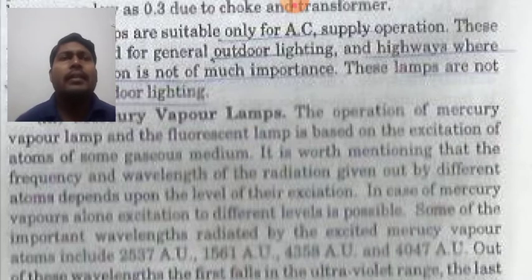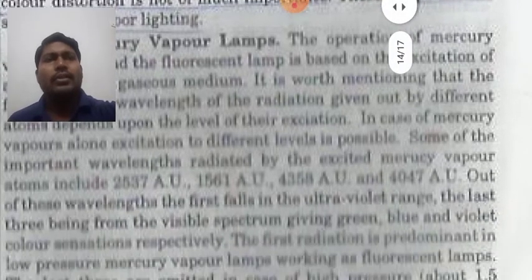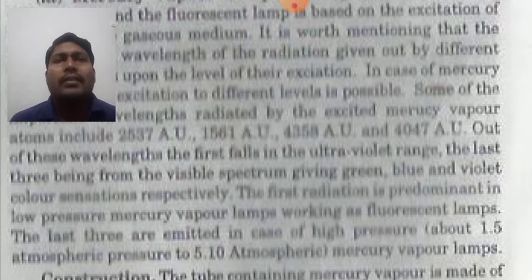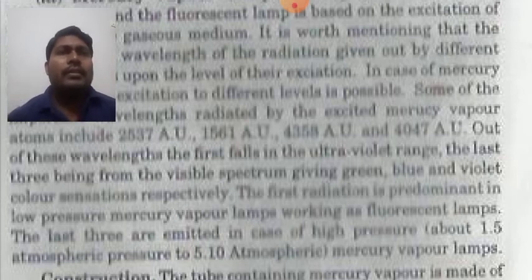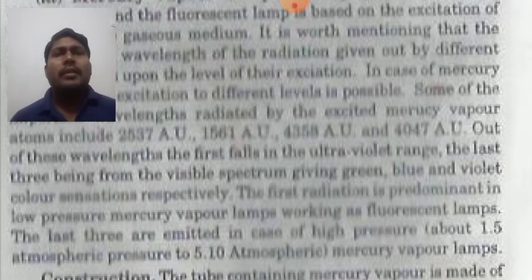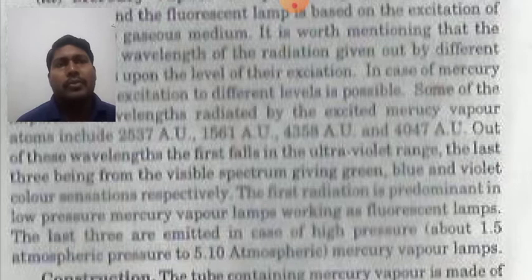Some important wavelengths radiated by excited mercury vapor atoms include 2537 Å, 1561 Å, 4358 Å, and 4047 Å. The first falls in the ultraviolet range. The last three, being the visible spectrum, give blue, green, and violet color sensation respectively. The first radiation is predominant in low pressure mercury vapor lamps working as fluorescent lamps. The last three are emitted in case of high pressure — about 1.5 to 5 atmospheric pressure — mercury vapor lamps.